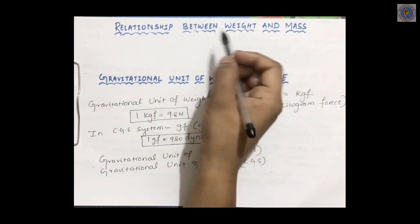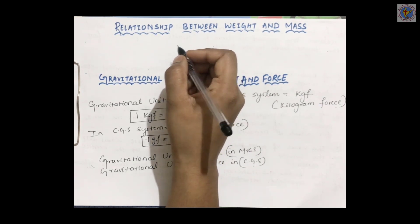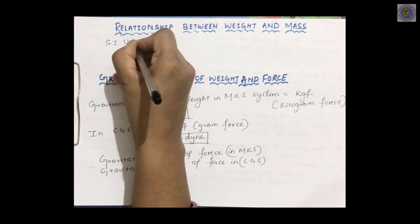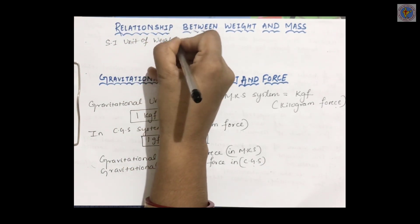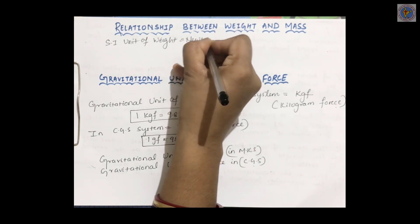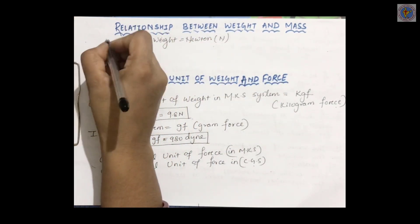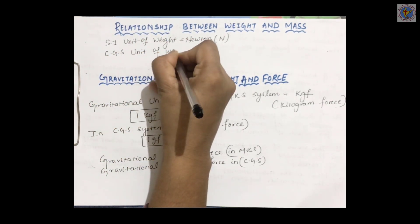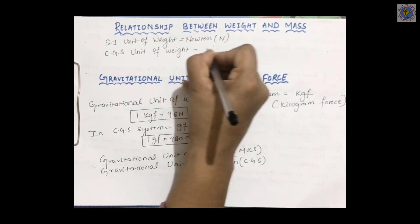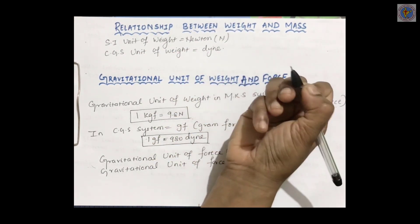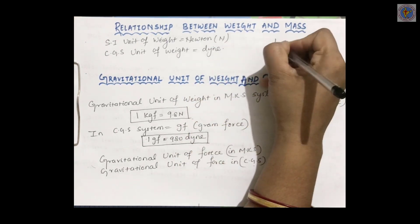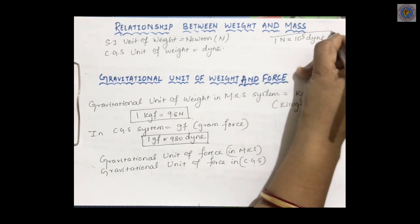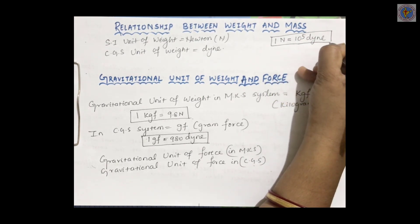Let us learn about the relationship between weight and mass. We know very well that weight is a vector quantity, and the SI unit of weight is Newton, and the CGS unit of weight is Dyne. Now we know the relationship between Newton and Dyne: 1 Newton is equal to 10 to the power 5 Dyne. How can we prove that 1 Newton is equal to 10 to the power 5 Dyne?